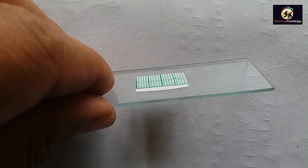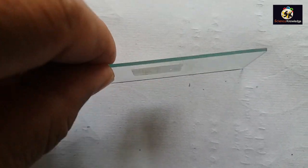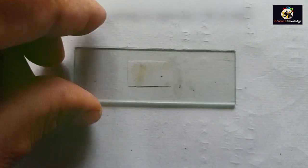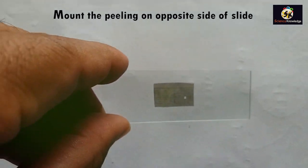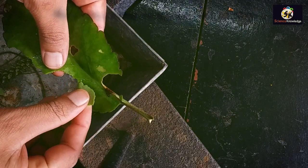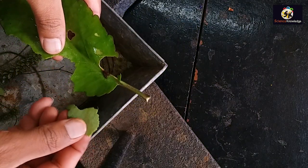We have to paste it on the lower surface and the peeling will be mounted on the upper surface of this slide. The peeling of the epidermis can be removed with the help of nail paint or manually by peeling of the leaf.